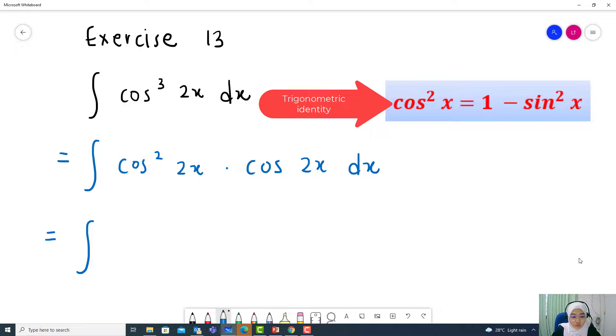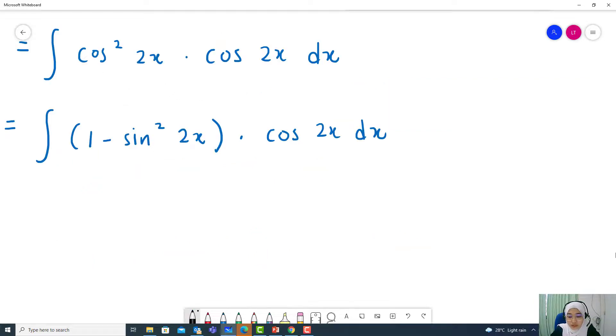So cos squared 2x replace it to 1 minus sin squared 2x. Multiply cos 2x dx. To apply u substitution, we let u equal to sin 2x and then differentiate du dx equal to 2 cos 2x.